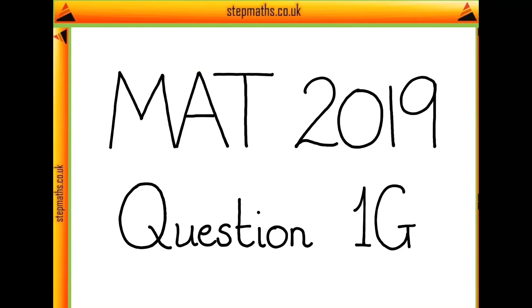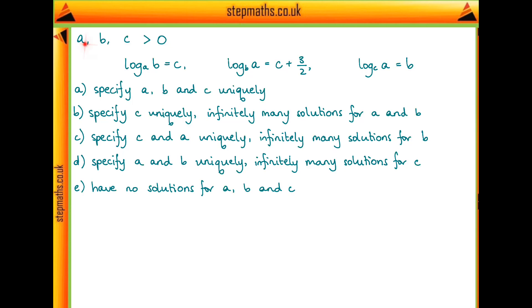Hi, in this video I'll go through question 1g on MAT 2019. Here we have a, b, and c all greater than zero, and three equations involving a, b, and c. We want to know which of these statements about how many solutions exist for a, b, and c are true from these equations.